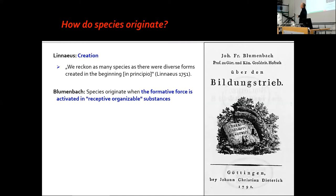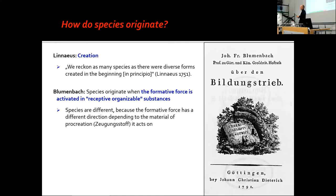Blumenbach says species originate when the formative force — the Bildungstrieb — is activated in so-called receptive, organized substances in nature. Species are different according to Blumenbach because the formative force has a different direction depending on the material of procreation. The difference originates from the material that the Bildungstrieb is acting on, not from the Bildungstrieb as such.